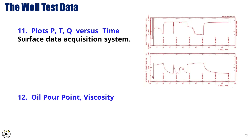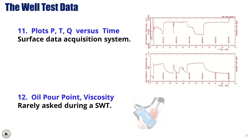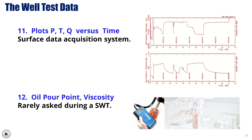12. Oil Pour Point and Viscosity — these measurements are rarely requested during a surface well test, but they can be important when assessing the flow characteristics of crude oil, particularly for transportation and processing.